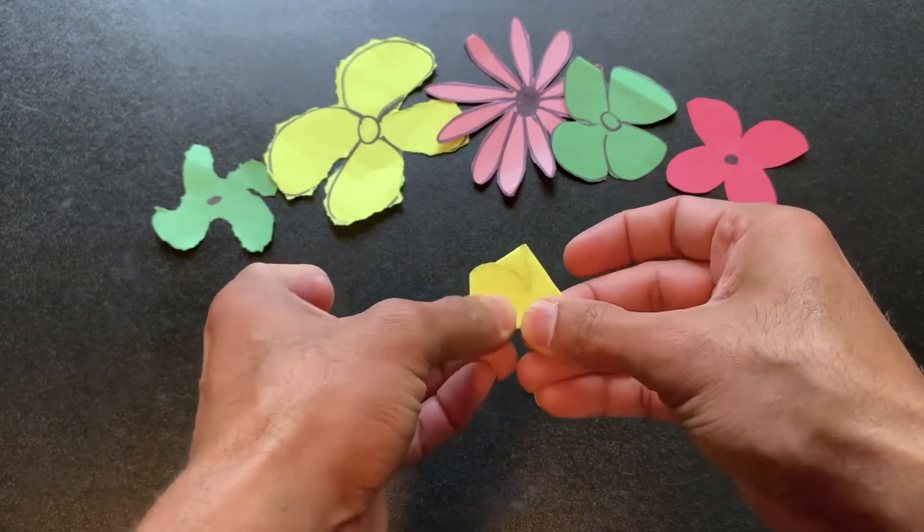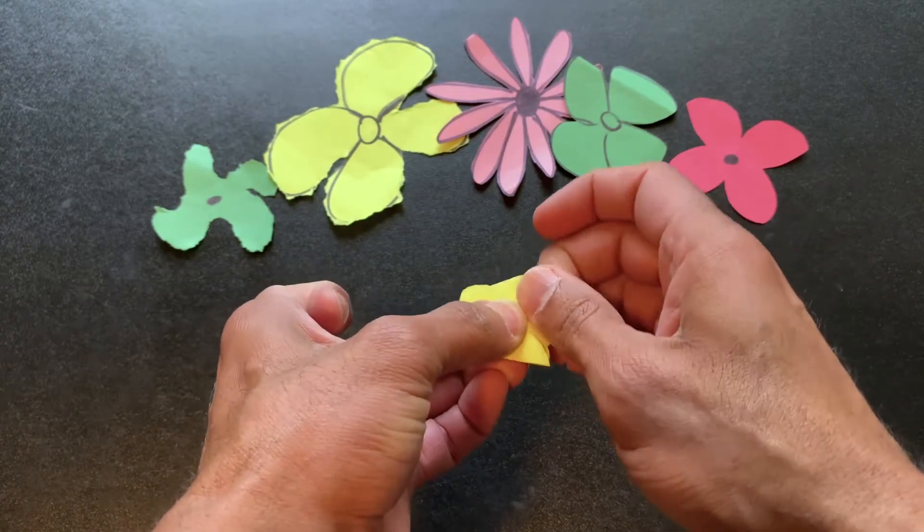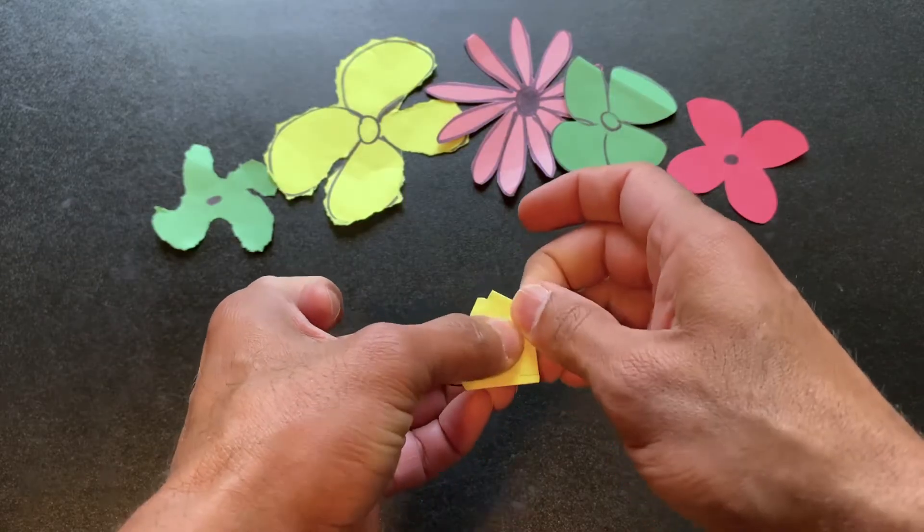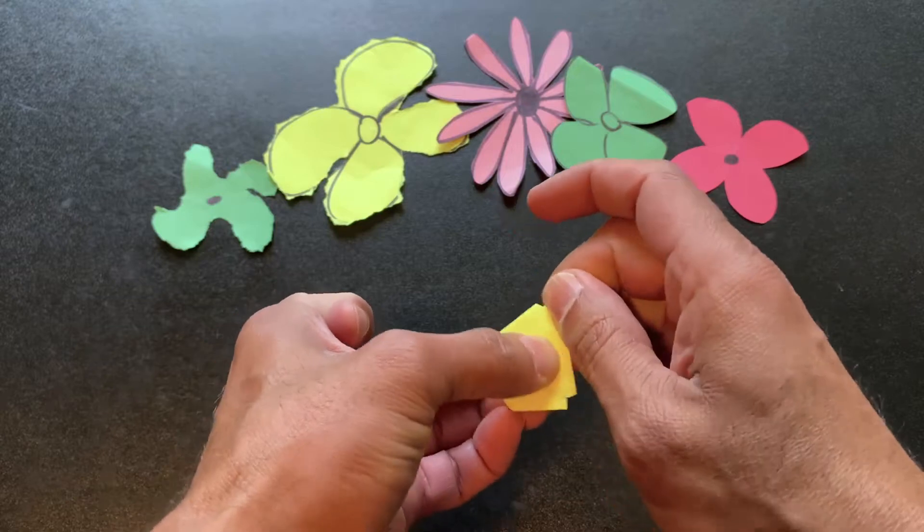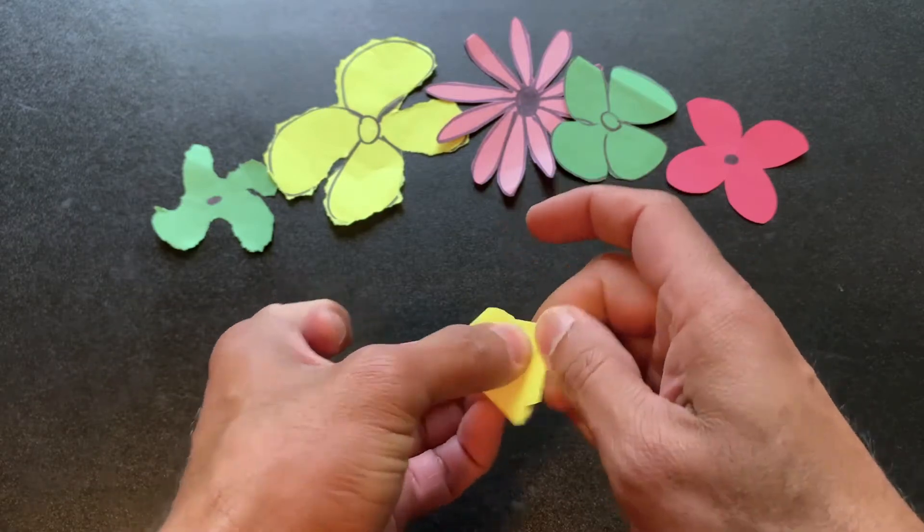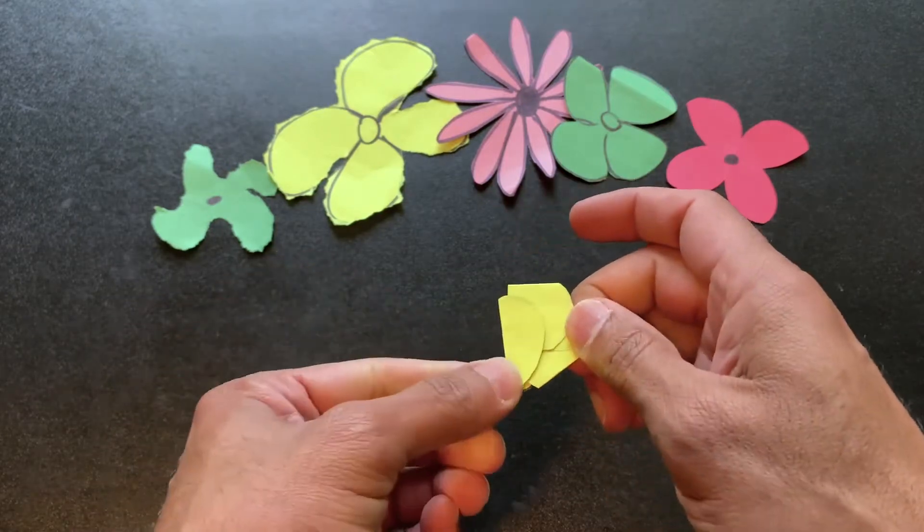Now you want to make sure that's a nice, good crease. So go back around and really push in on each one of those creases. Because the flatter it is, the better this will work. Once you've got it nice and flat, your flower is ready to bloom.